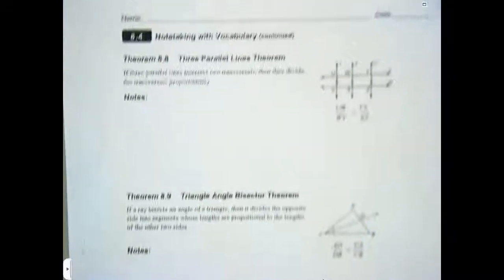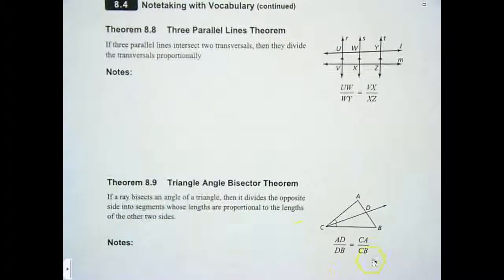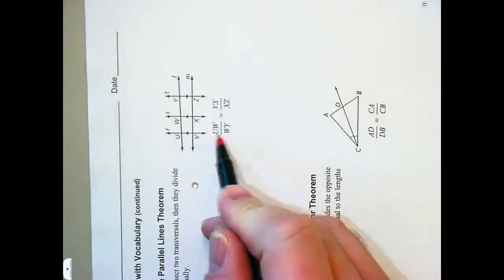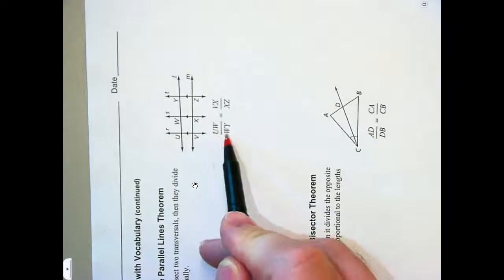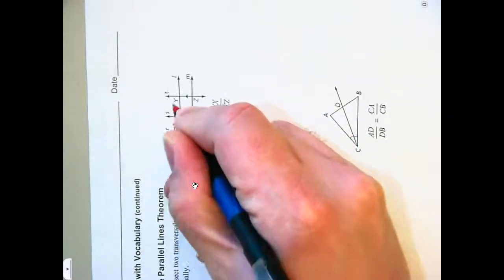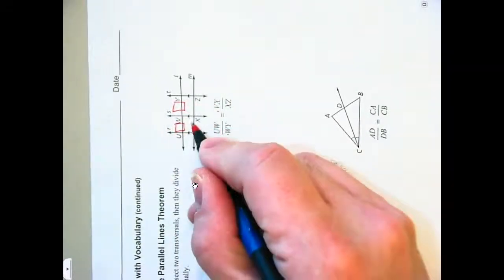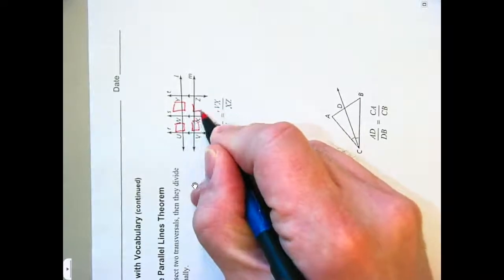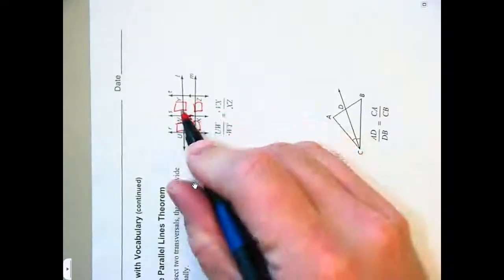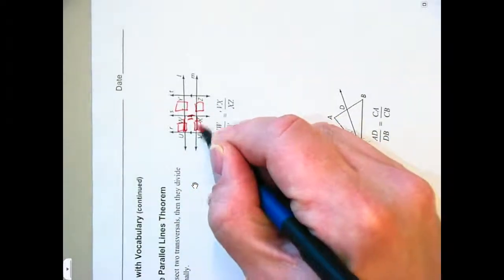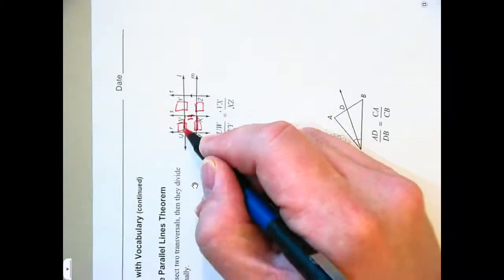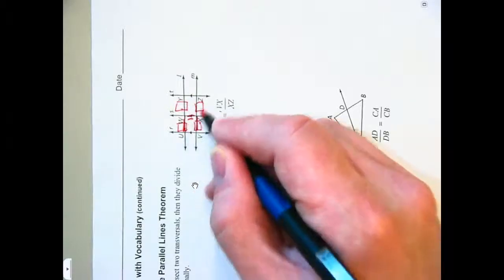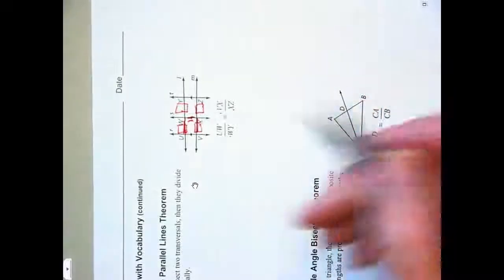Three parallel lines theorem and the triangle bisector theorem. I want you to read through both of those. Now I'm going to turn the paper like this because I like to look at my parallel lines horizontally, and it also helps me with the proportion they're saying. UW is to WY, that's this is to that as VX is to XZ. If you have your parallel lines, the segments that are formed by parallel lines intersecting transversals, those segments are proportional.